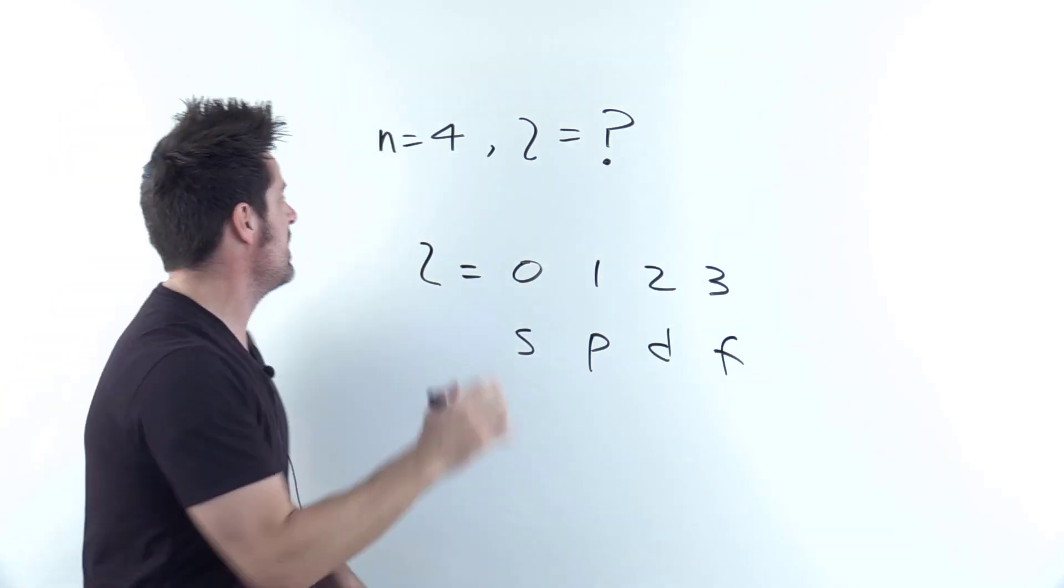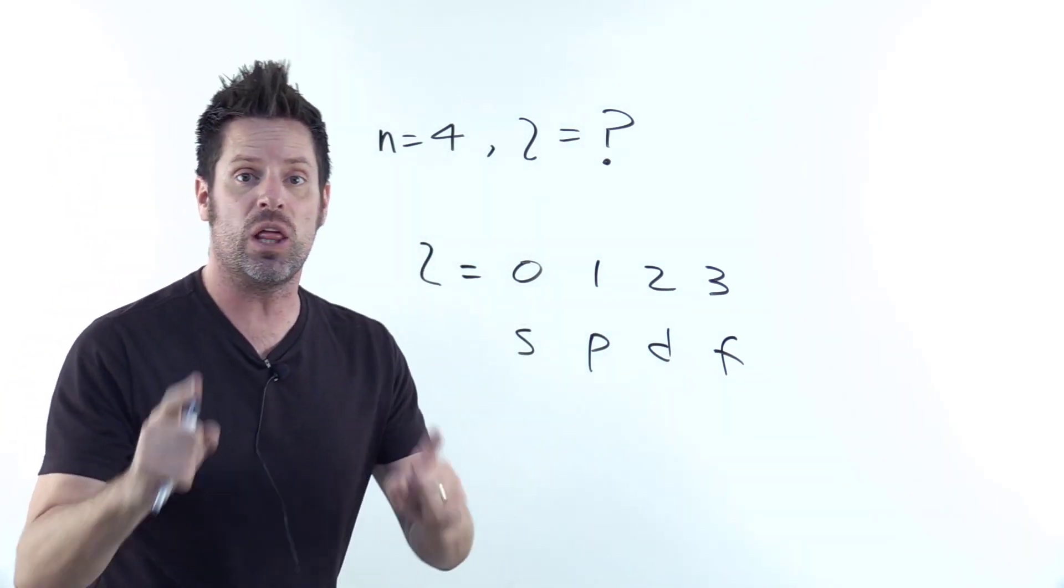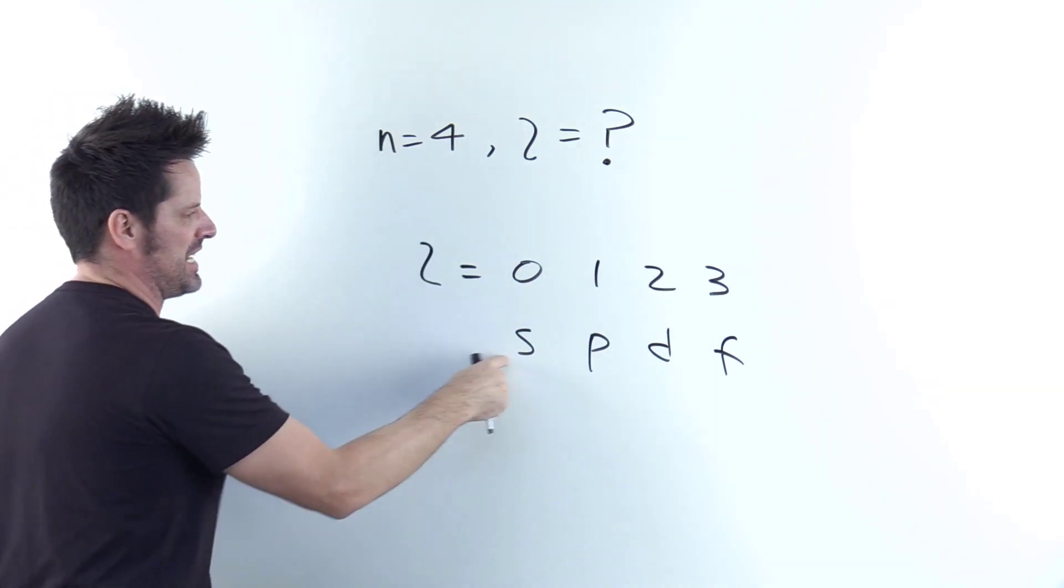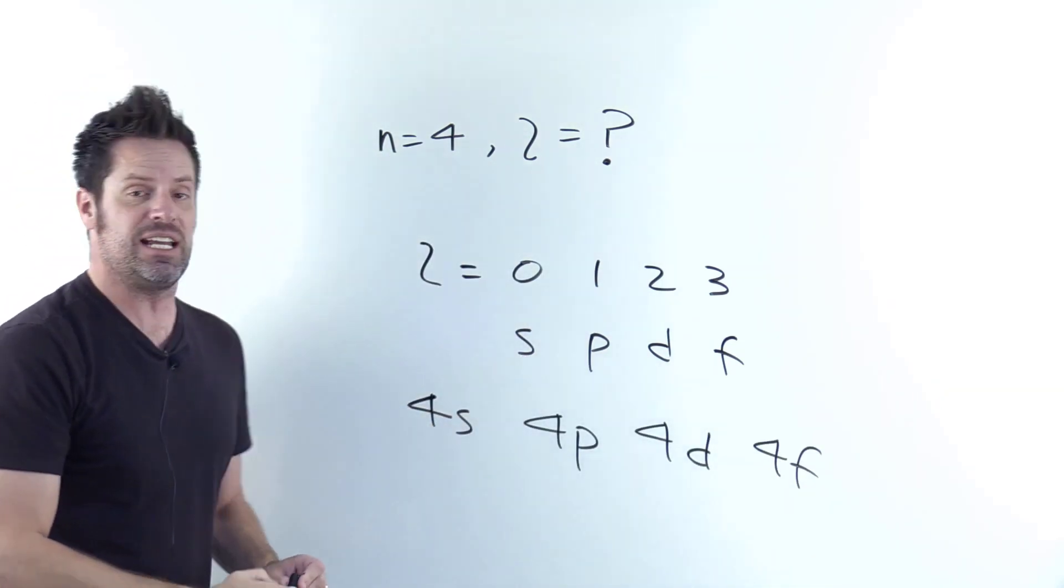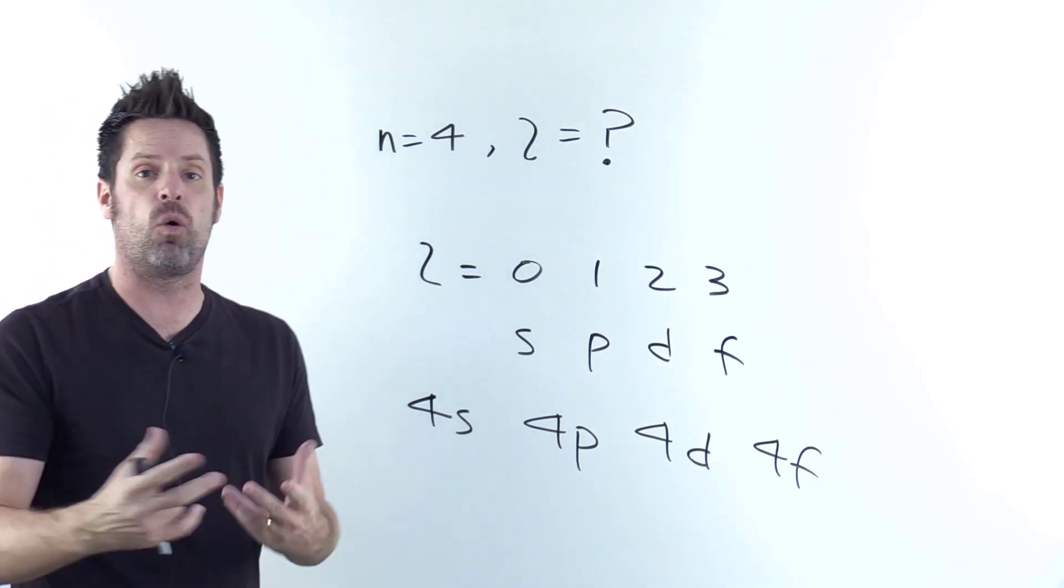So what possible values of l can I have if n equals 4? To answer that question, all I have to do is place a 4 next to each of these letters and ask if each of these orbitals exist.